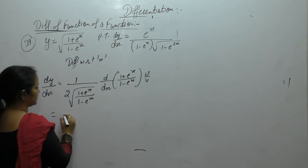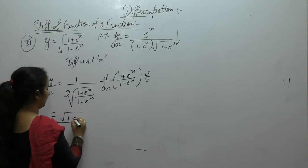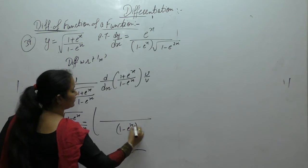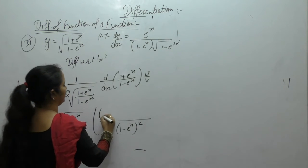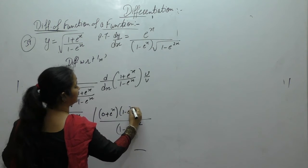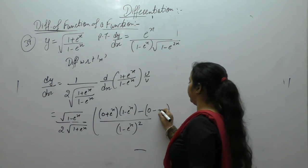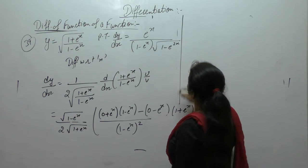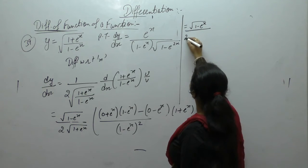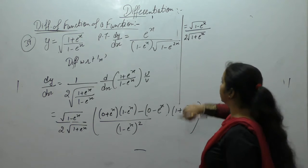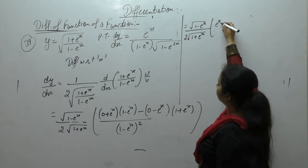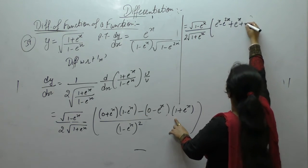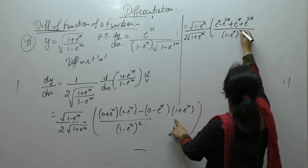Apply the u upon v rule. So: 1 upon 2, times (1 minus eˣ) over √(1 plus eˣ), v squared. u dash: derivative of 1 is 0, derivative of eˣ is eˣ, times v as it is. Minus v dash: derivative of 1 is 0, derivative of eˣ is eˣ, times u as it is. We get √(1 minus eˣ) over 2√(1 plus eˣ). Expanding the brackets: minus eˣ plus eˣ gives 2eˣ, and minus minus plus gives eˣ plus e²ˣ, over (1 minus eˣ)².